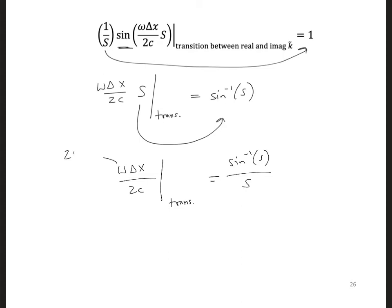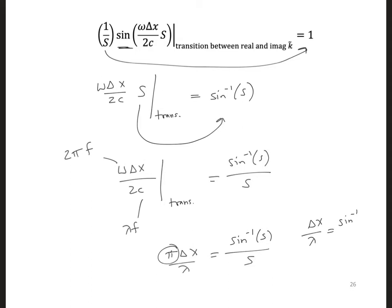Now let's simplify the left side of this equation. We can use ω = 2πf and also c = λf. Then the left-hand side simplifies to π·Δx / λ, and that equals the arcsine of s over s. So if we move π to the other side, we get Δx / λ = arcsine(s) / (s·π).